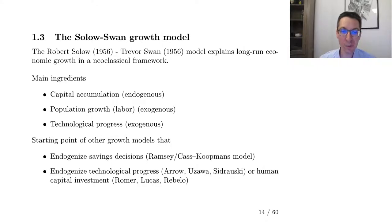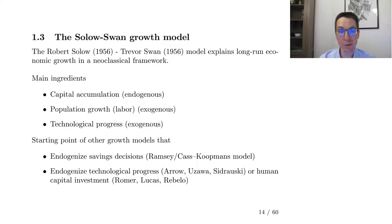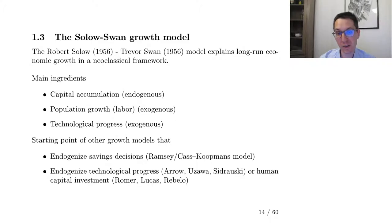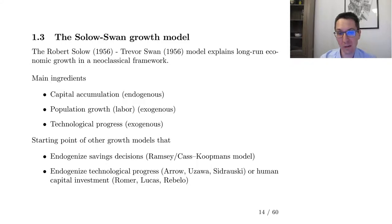The main ingredient in the Solow-Swan model is capital accumulation. We also introduce population growth and technological progress. We say that capital accumulation is endogenous, meaning it is something that we want to explain within the model — it's something that we care about.